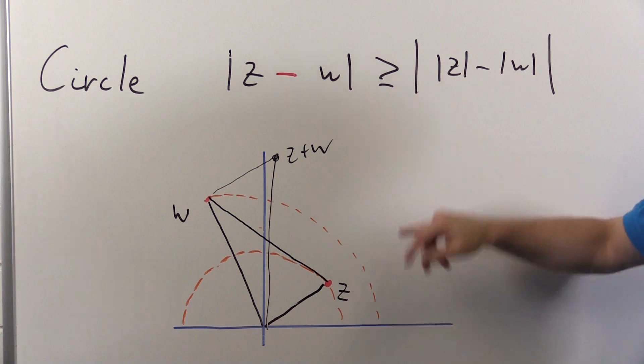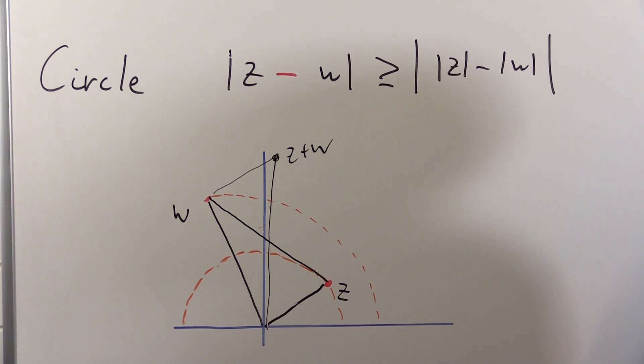They could be equal, of course, if z and w happen to have the same argument. Then this is an equal sign, and in fact the same thing would occur for triangle inequality.